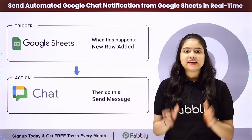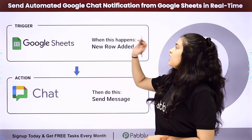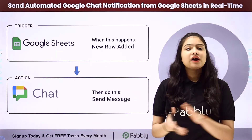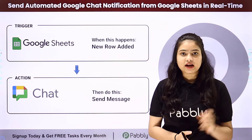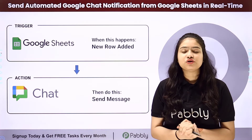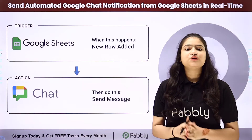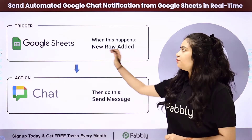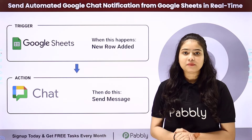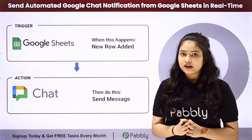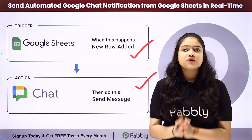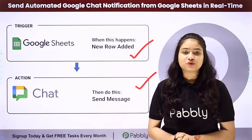Hello everyone, welcome back to Pabbly Connect. In this video, we are going to learn how to send automated Google Chat notifications from Google Sheets in real time. Whenever I add a new row or new data in my Google Sheets, automatically that same data should be sent in the form of a new message on my Google Chat space. We will integrate both these applications without any coding or programming skills with the help of Pabbly Connect, which is an amazing automation and integration software. We have Google Sheets in our trigger and Google Chat in our action.